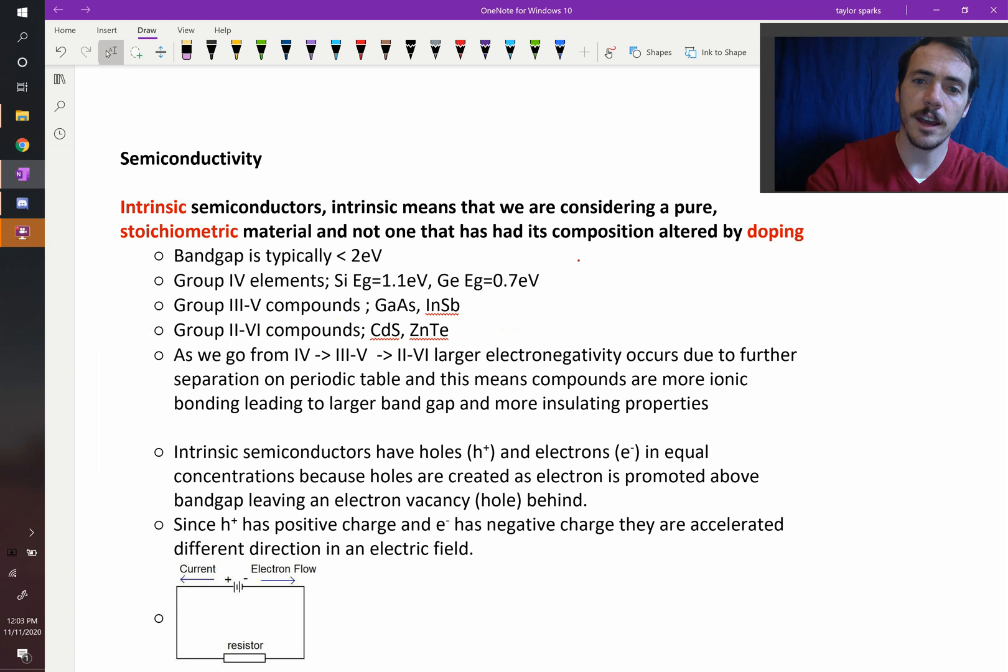But the trend is that as you go down from group four to three-five, two-six, what you're seeing is you're putting a bigger difference in electronegativity. At group four, they have the same electronegativity. Group three-five, there's a little difference.